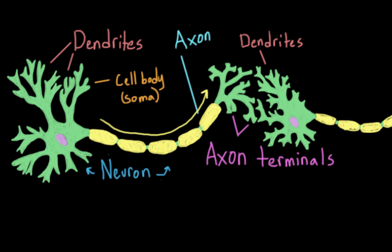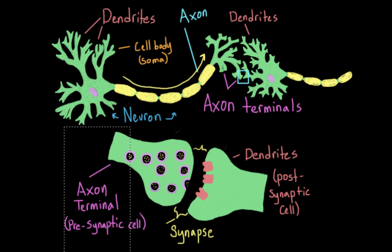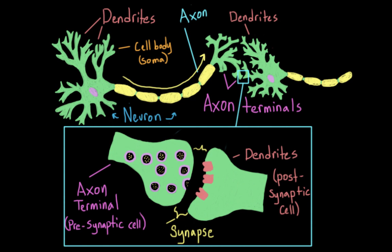So how does the message get from one cell to the next? When the action potential reaches the axon terminal, the electrical signal is actually changed into a chemical signal. The action potential triggers the cell to release vesicles full of chemicals called neurotransmitters. These cellular sacs dock with the cellular membrane, and the neurotransmitter spills out into the synapse, which is what we call the space between these two cells.